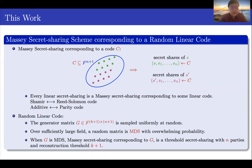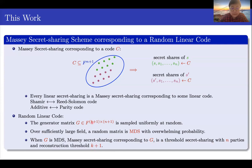We consider Massey's secret sharing schemes corresponding to a random linear code. To sample a random linear code, you just sample the generator matrix G uniformly at random. Since we consider an exponentially large field F, when you sample a random matrix G over an exponentially large field F, the random matrix is maximum distance separable with overwhelming probability. When the code G happens to be an MDS code, the Massey's secret sharing scheme corresponding to G is a threshold secret sharing scheme with N parties and K+1 reconstruction threshold, where K+1 is the dimension of the code.